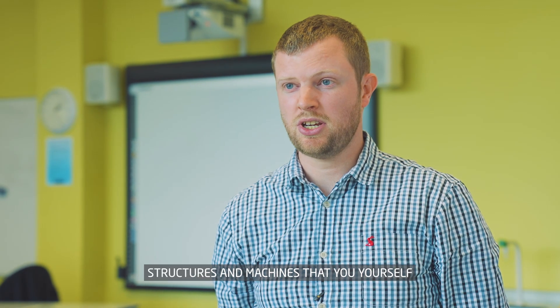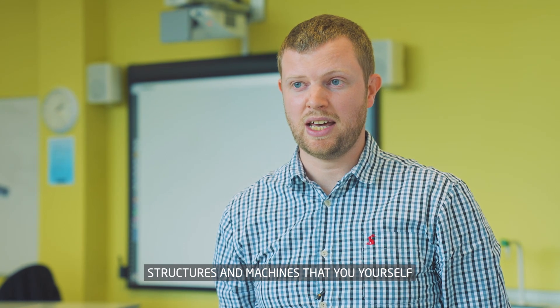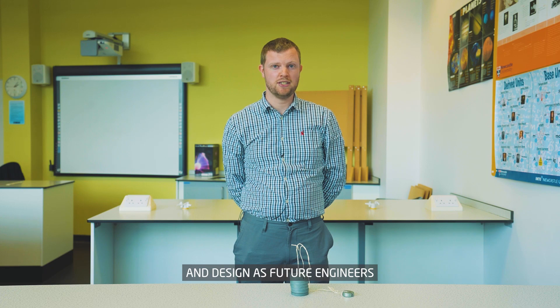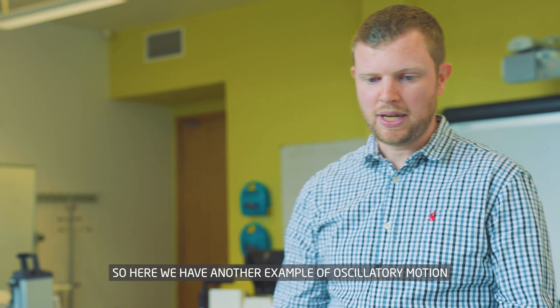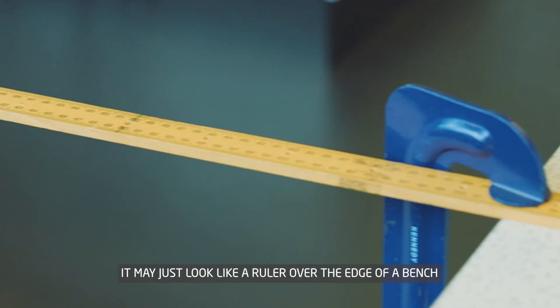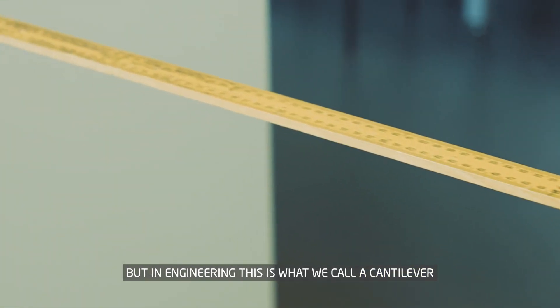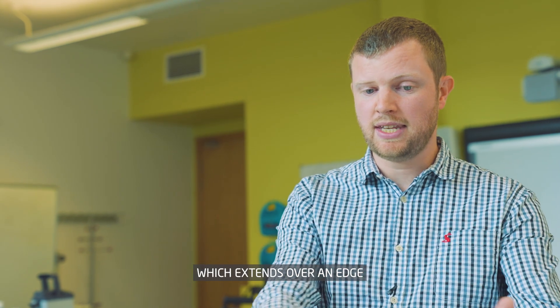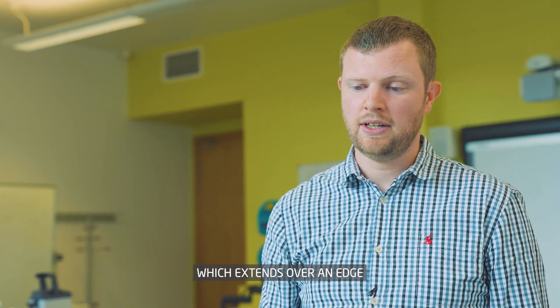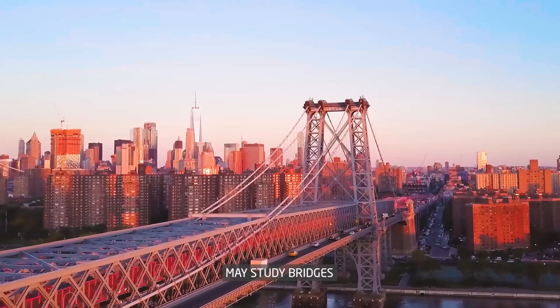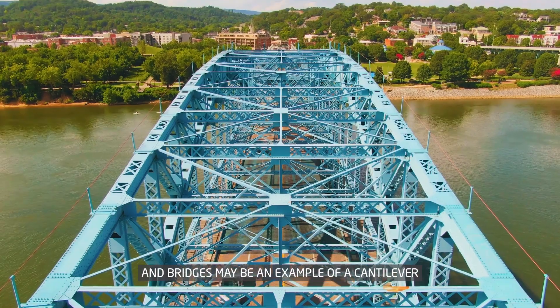Here we have another example of oscillatory motion. It may just look like a ruler over the edge of a bench, but in engineering this is what we call a cantilever. It's a beam which extends over an edge. Those of you going into civil engineering may study bridges, and bridges may be an example of a cantilever.